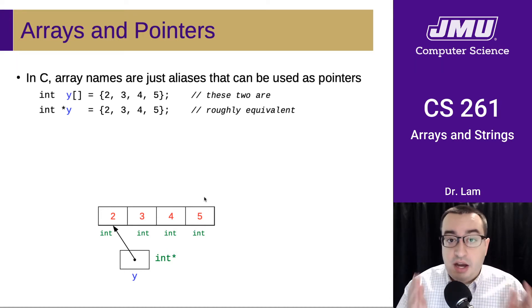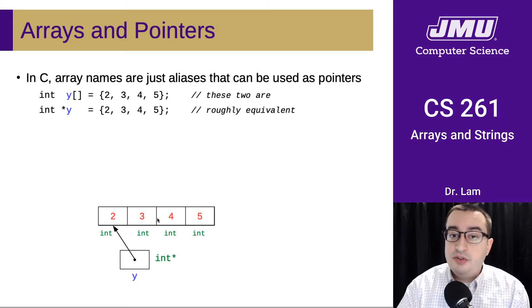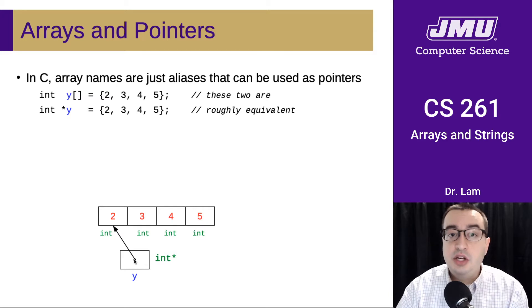Those are laid out in consecutive locations in memory. And then there is an alias or a pointer called Y. For now, there's some caveats that we'll talk about later, but for now it's good for you to be thinking about this as being a separate integer that's stored as a separate variable. Its name is Y and it is a pointer to the array. Specifically, it's a pointer to the first element of the array.